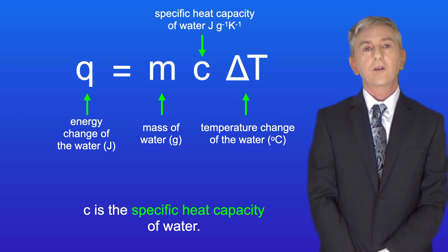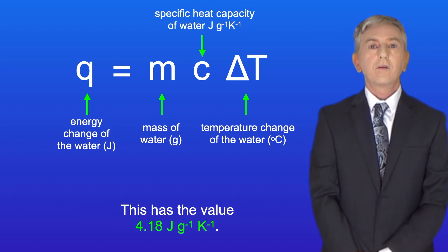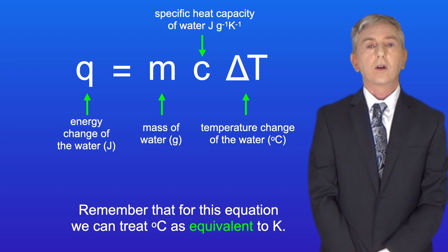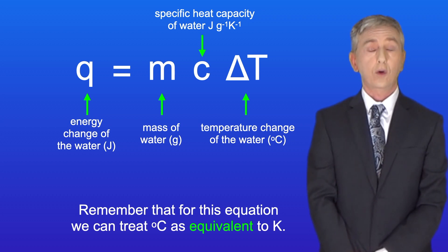C is the specific heat capacity of water. This has the value 4.18 joules per gram per kelvin. And remember that for this equation we can treat degrees Celsius as equivalent to kelvin.